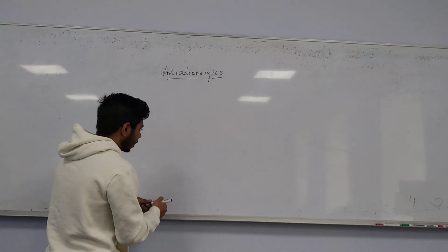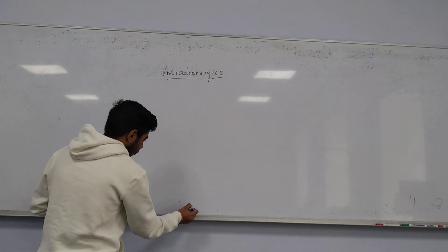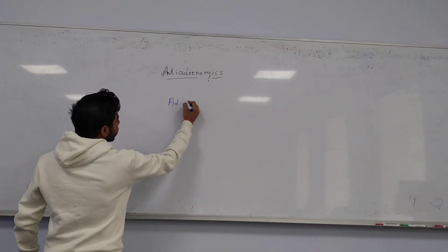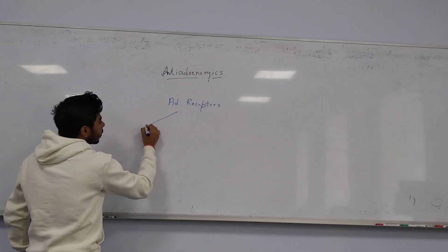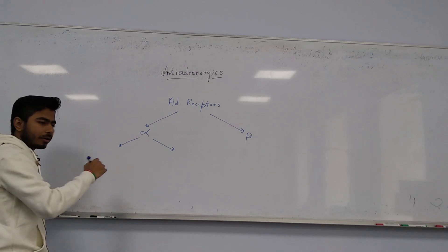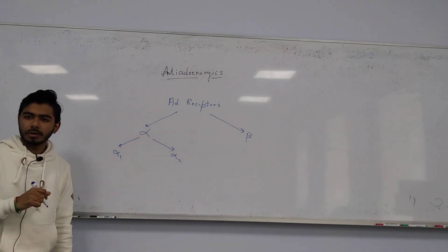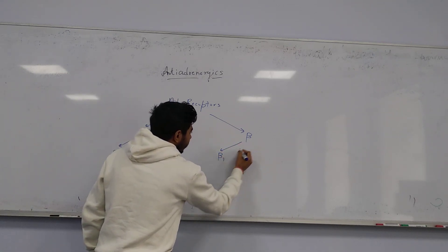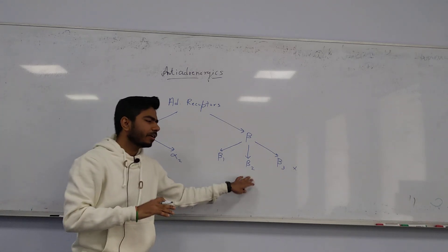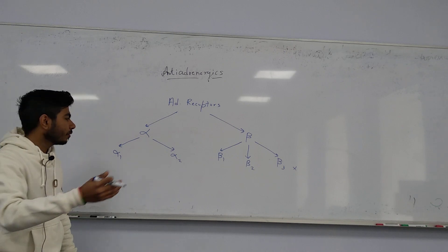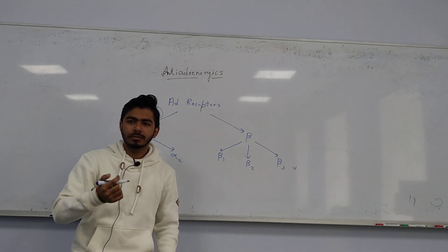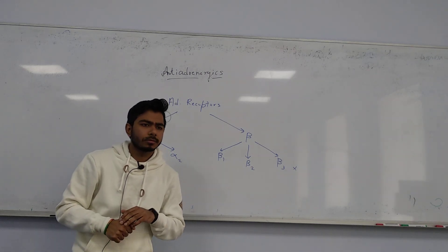We have adrenergic receptors — alpha and beta. Alpha was divided into alpha 1 and alpha 2. Beta was divided into beta 1, beta 2, and beta 3, but we won't consider beta 3 — only beta 1 and beta 2. In the last class we discussed drugs that were stimulating these receptors, either non-selective or selective.